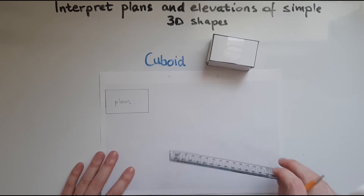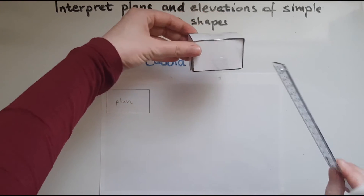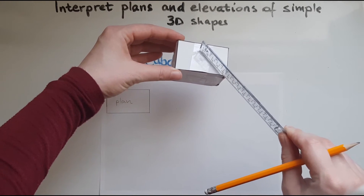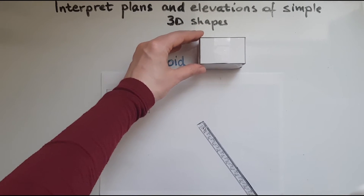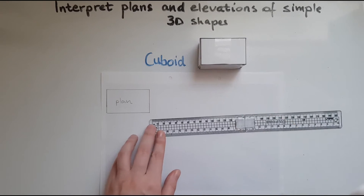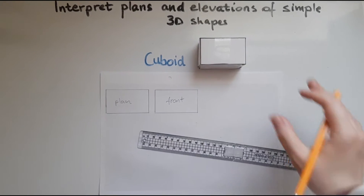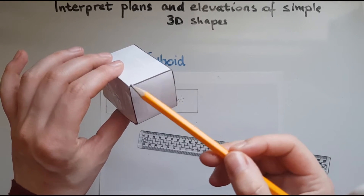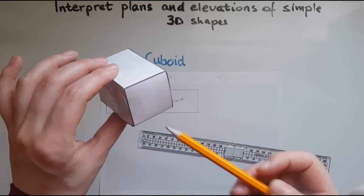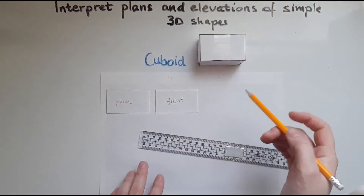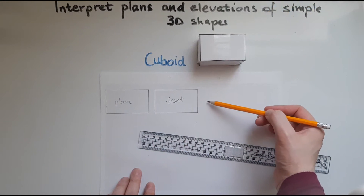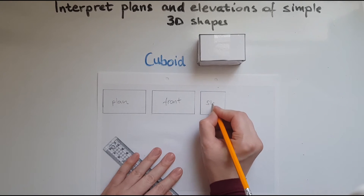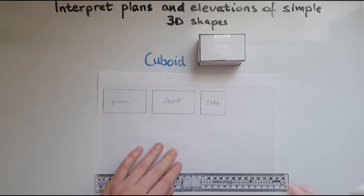In terms of the front elevation, it's going to be identical because this face is identical to the other for this cuboid. So I'll do the same thing over here. The side elevation, however, is not identical. We've got four centimetres by four centimetres — a square that is four centimetres wide and four centimetres long. So we have the side elevation of the cuboid.